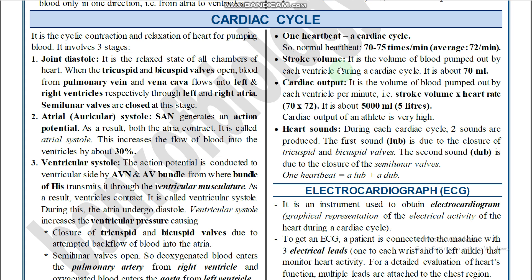Stroke volume is the volume of blood pumped from the ventricles during one cardiac cycle. Cardiac output is the volume of blood distributed from the ventricle per minute. The standard values are: stroke volume — 70 ml; cardiac output — 5000 ml, calculated as 70 multiplied by 72.